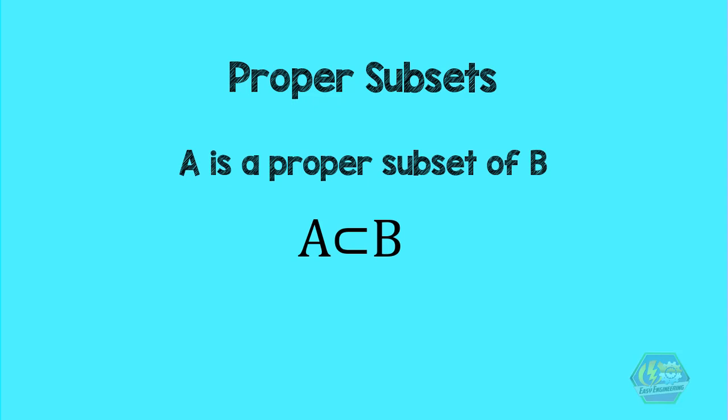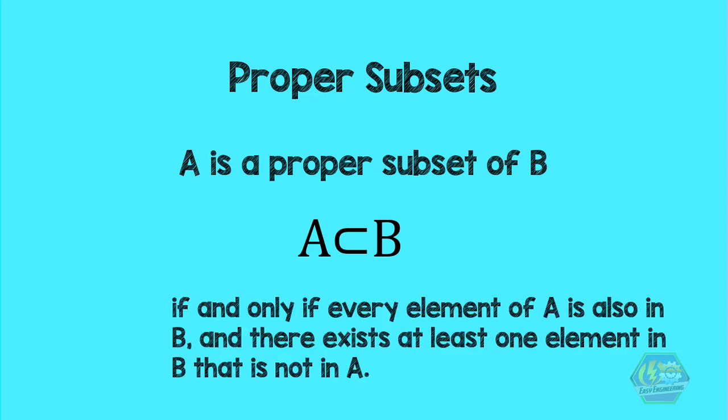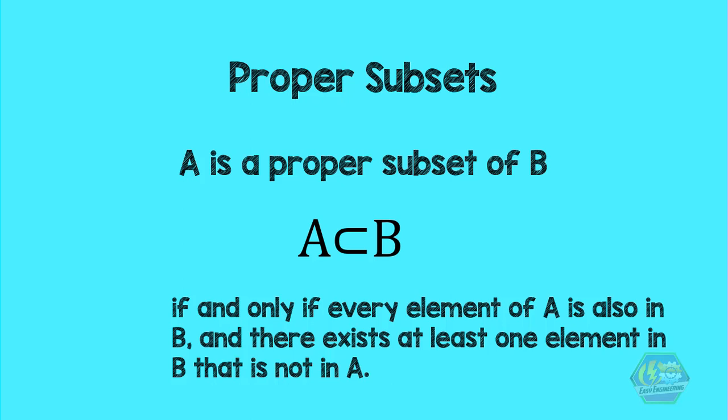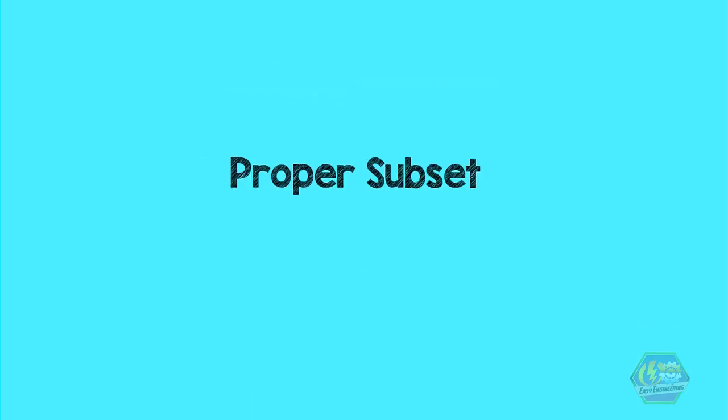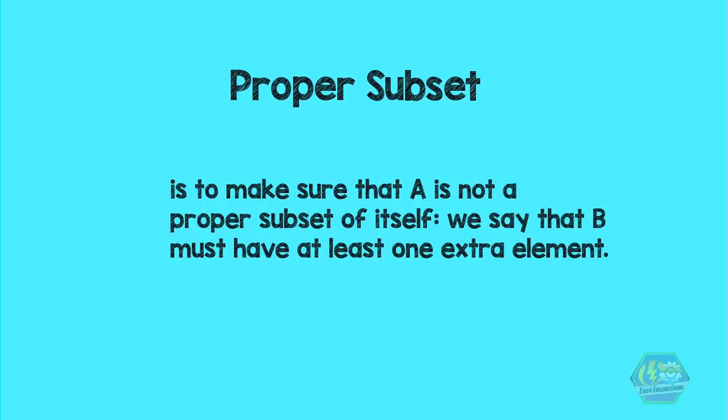Now let's talk about proper subsets. In general, A is a proper subset of B if and only if every element of A is also in B, and there exists at least one element in B that is not in A. A proper subset is to make sure that A is not a proper subset of itself. We say that B must have at least one extra element.